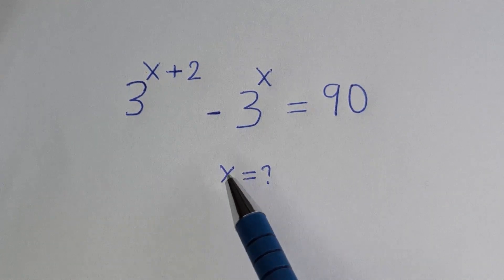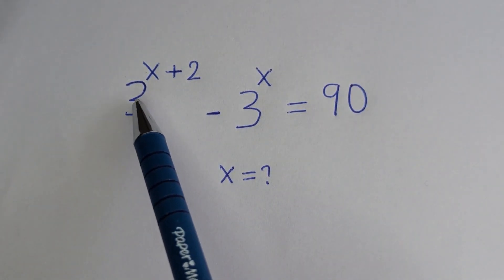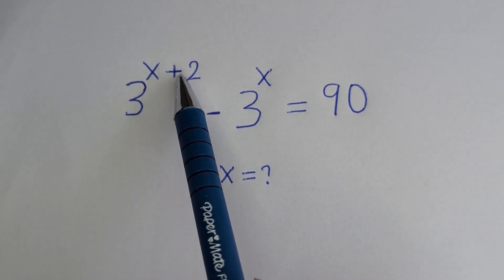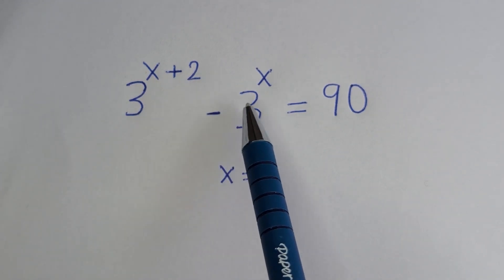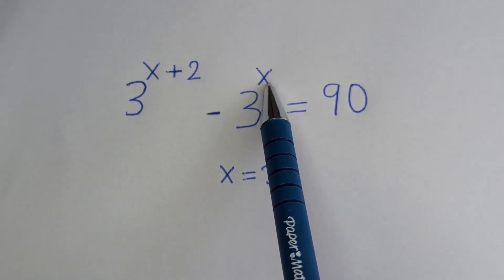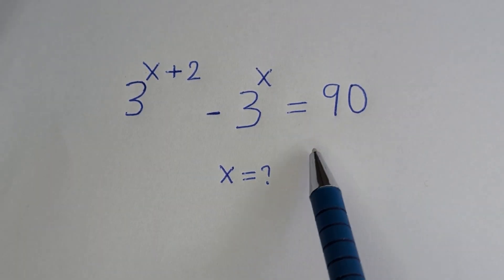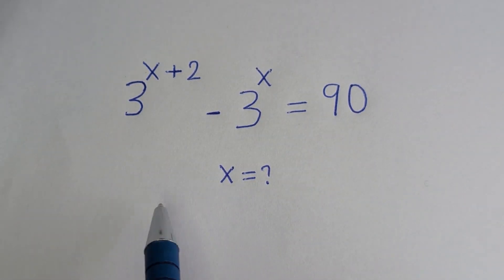How to solve for S in this equation: 3 raised to power S plus 2, minus 3 raised to power S, is equal to 90.